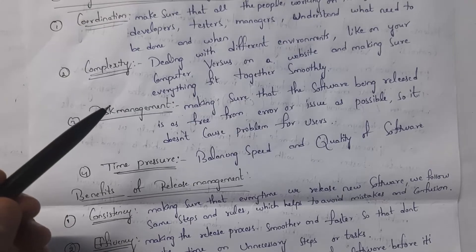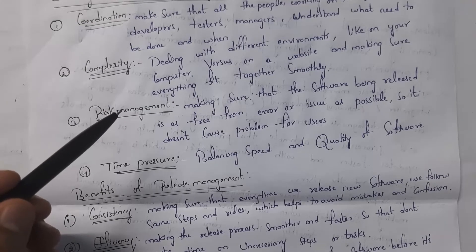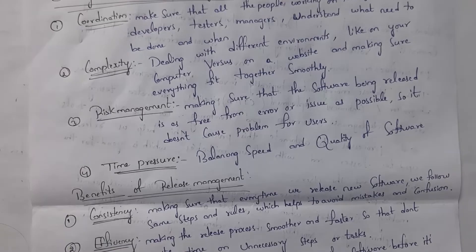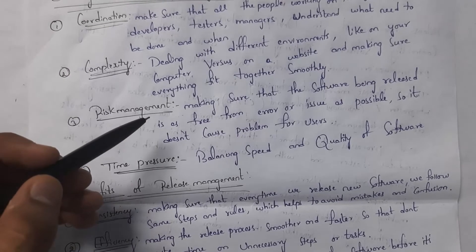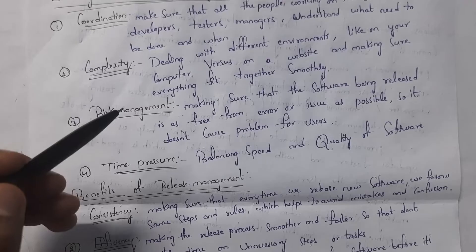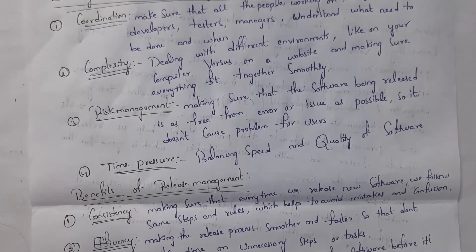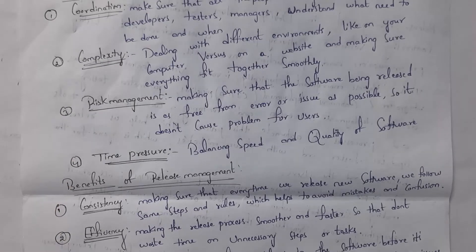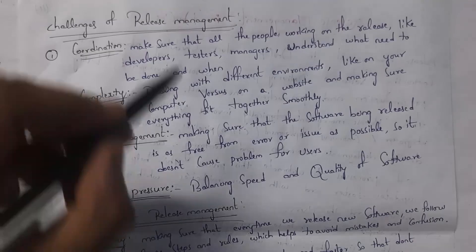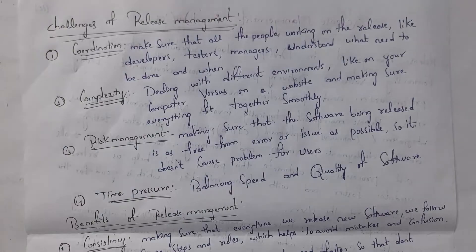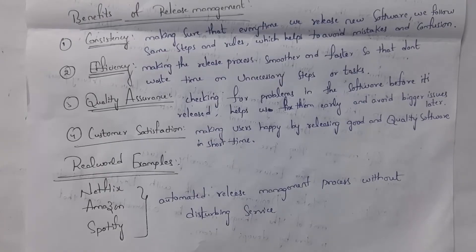Third is risk management — whatever software we develop, we need to make sure it is working smoothly without errors, and if there are any errors, we need to fix them immediately so they do not cause problems for users. Fourth is time pressure — in DevOps, we need to develop high-quality software in a short period of time. We need to face all these challenges in release management.